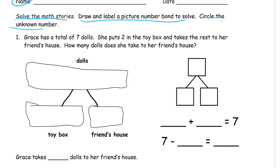So Grace has a total of seven dolls. There's her total of seven — all the dolls will go there. She puts two in the toy box and we draw a picture; two of them are going to go here. And she takes the rest to her friend's house. We don't know how many that's going to be yet because they didn't tell us, so that's going to be our unknown. The question is: how many dolls does she take to her friend's house?